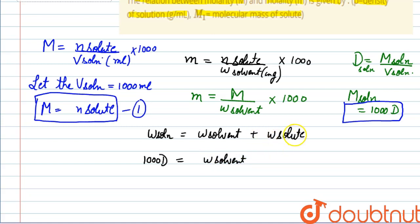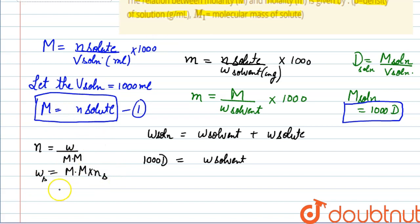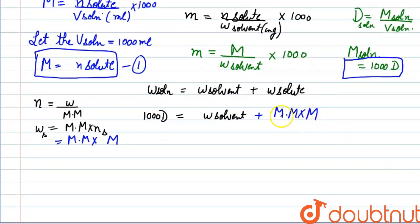We know that number of moles equals given weight divided by molecular mass, so weight equals molecular mass times n. The weight of solute equals molar mass times the number of moles of solute, which equals molarity (M). So weight of solute equals MM × M. Therefore, weight of solvent equals 1000d minus MM times molarity.